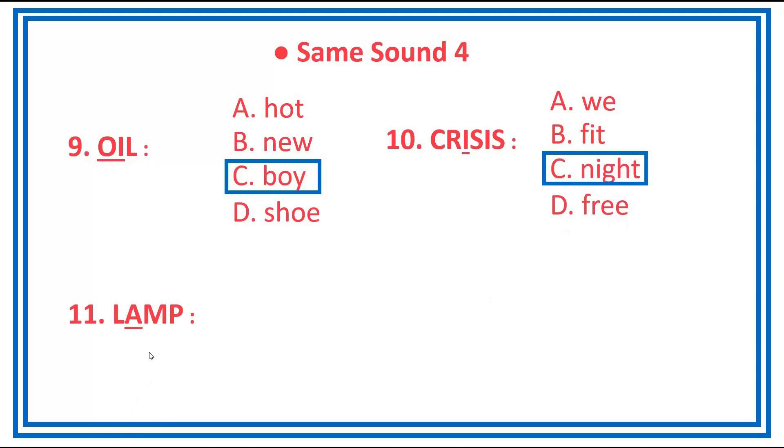Number 11. Lamp. A, man. B, run. C, lake. D, mall. Answer is letter A, man.